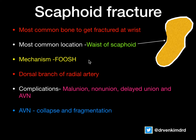Complications of scaphoid fracture are malunion, nonunion, delayed union, and AVN. If the proximal pole or the waist of the scaphoid gets fractured, the proximal fragment goes for collapse and fragmentation. Initially the X-ray might show sclerosis; gradually it collapses and may show fragmentation. This is the interesting vascular supply of the scaphoid, which we need to remember, and which has to be intervened immediately to prevent all these complications.